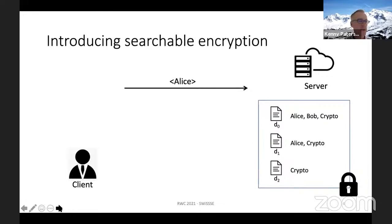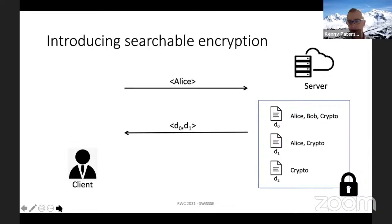We'd like to use encryption while still providing the ability to perform searches over the data for keywords. In the simplest form we have single keyword searches: the client sends an encrypted version of a keyword like 'Alice' to the server, the server performs computation over the encrypted data, and sends back the relevant list of documents. More generally, you might imagine conjunctive or more complex keyword searches, and ultimately some form of SQL queries over encrypted data.